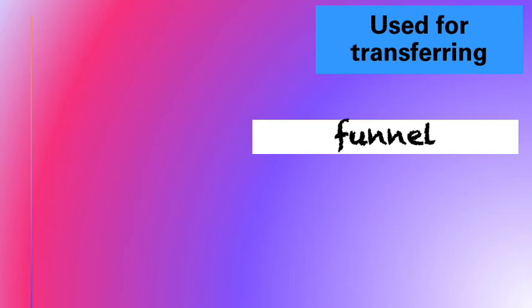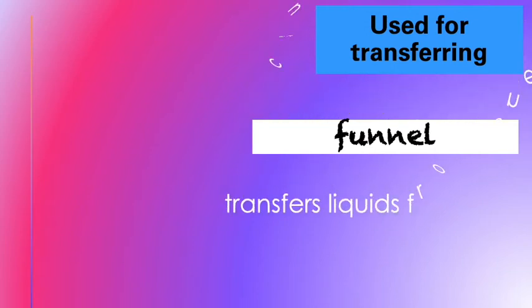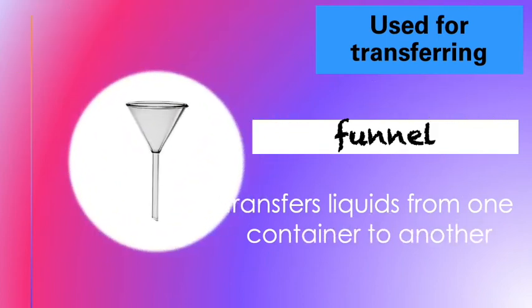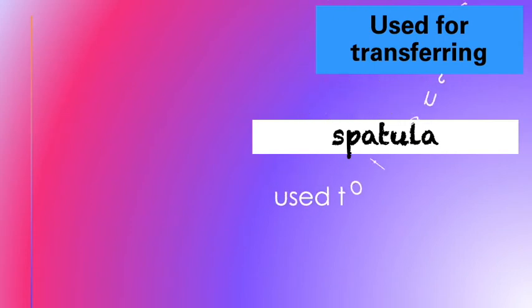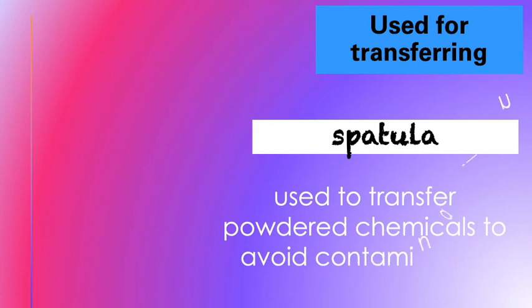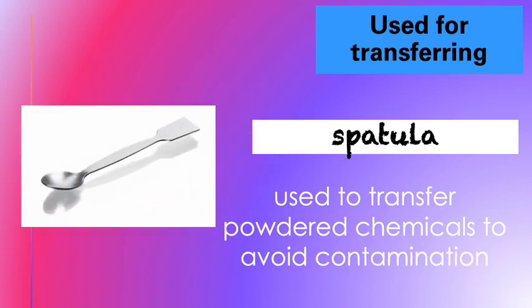Next is a funnel. A funnel transfers liquids from one container to another. Here's a picture of a funnel. The next one is a spatula. It is used to transfer powdered chemicals to avoid contamination. Here's a picture of a spatula.